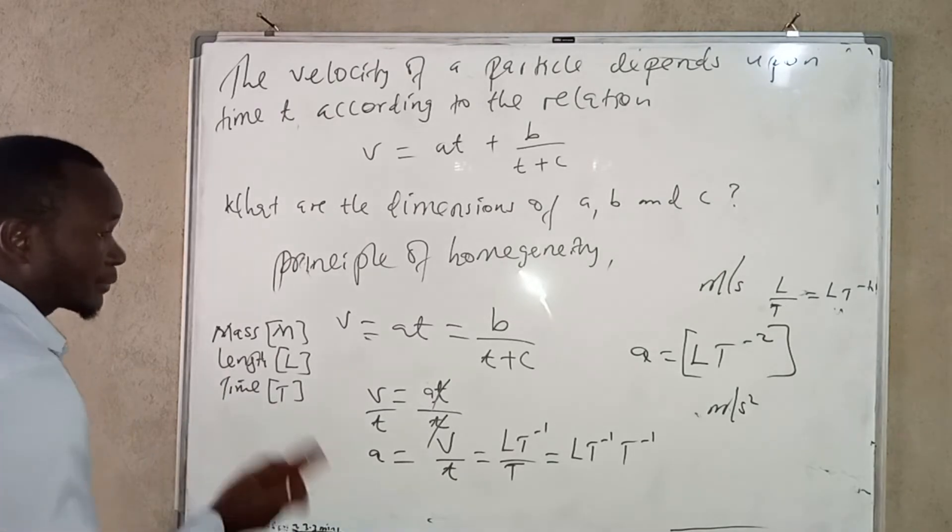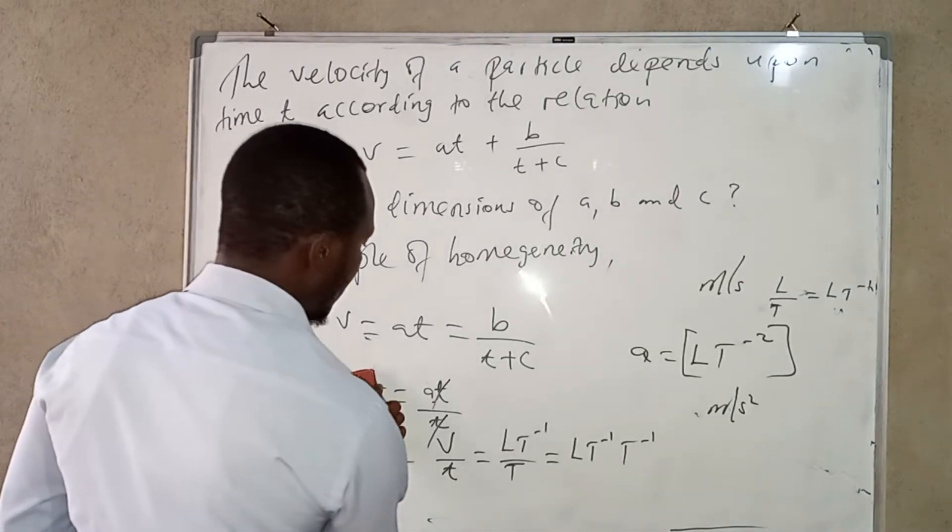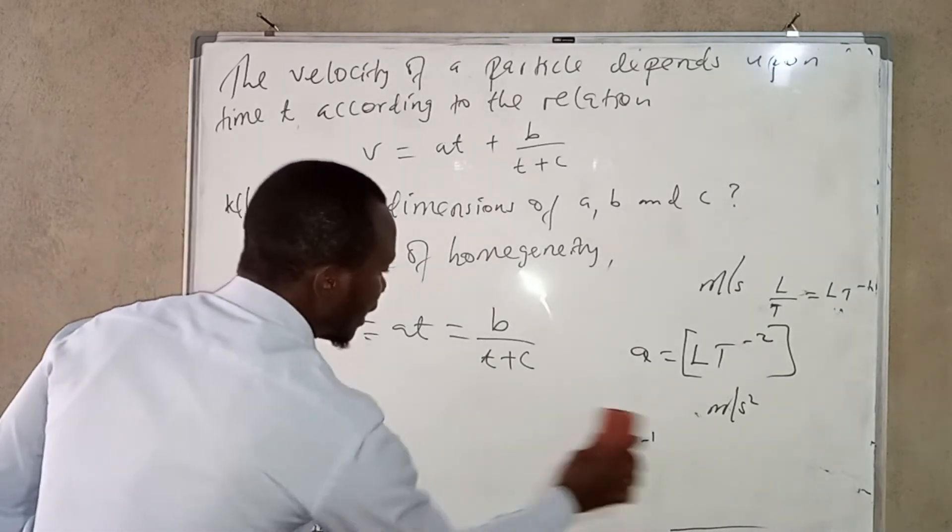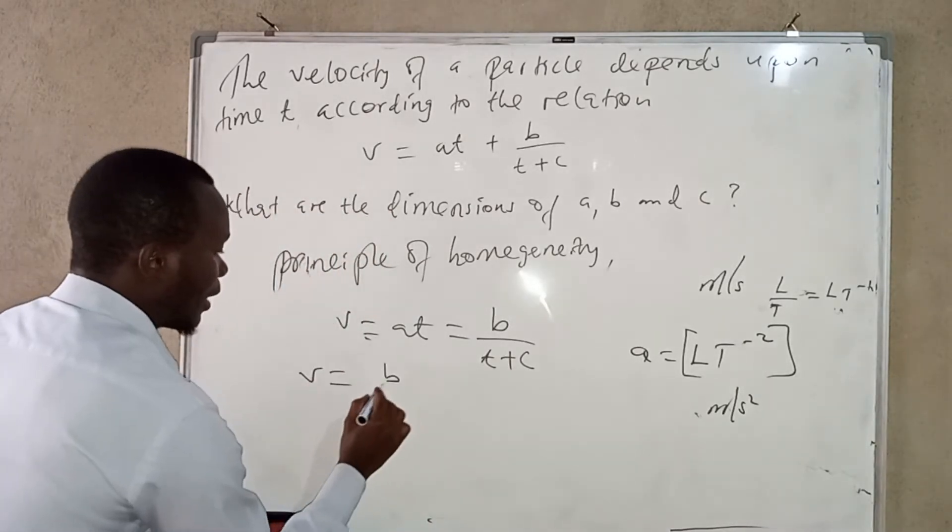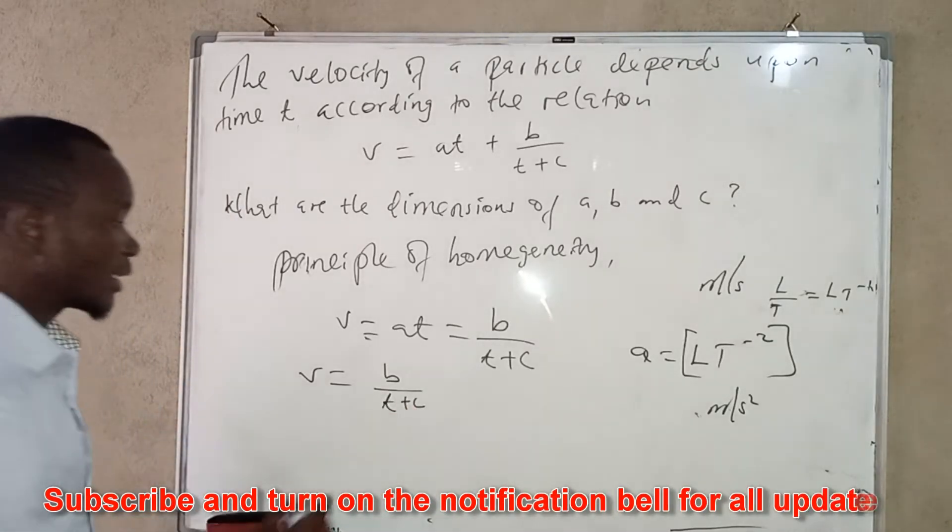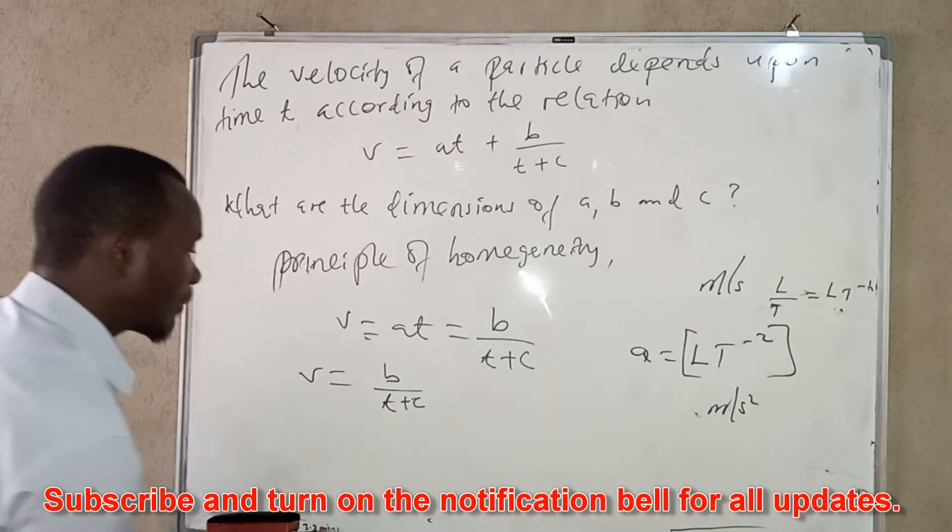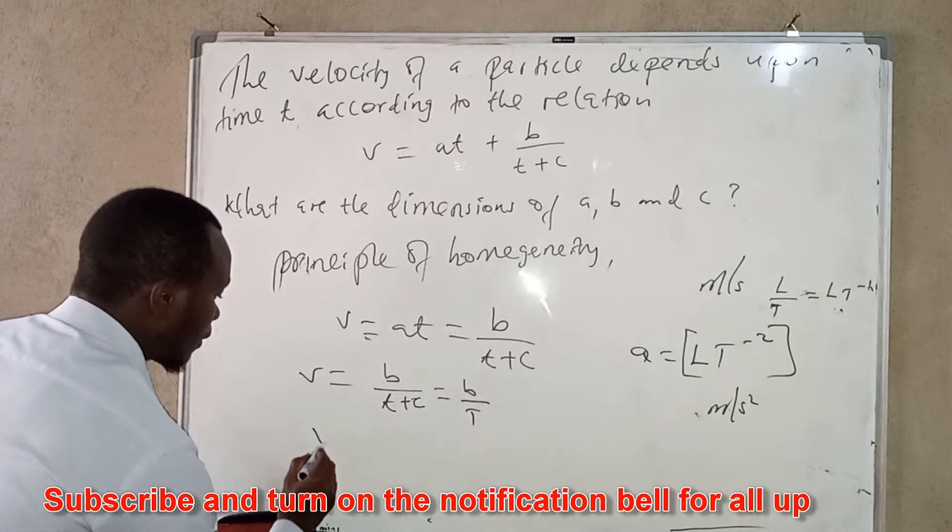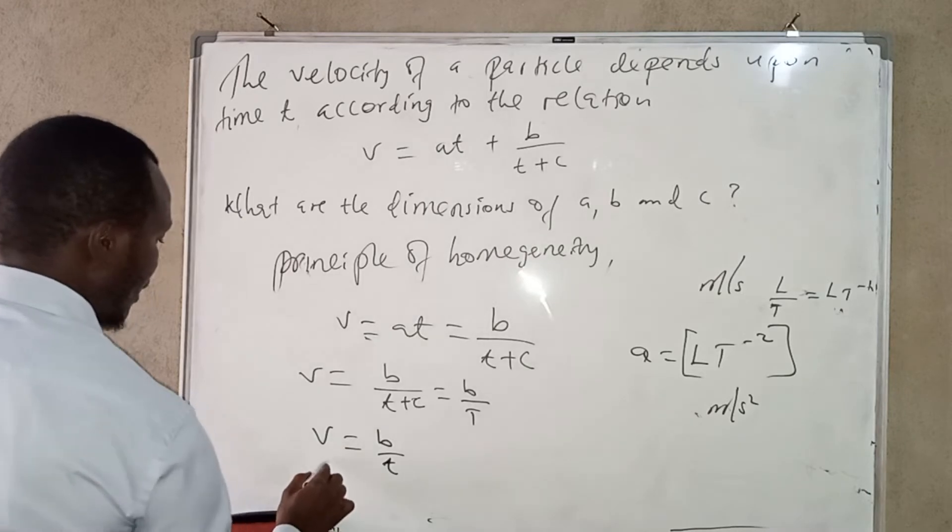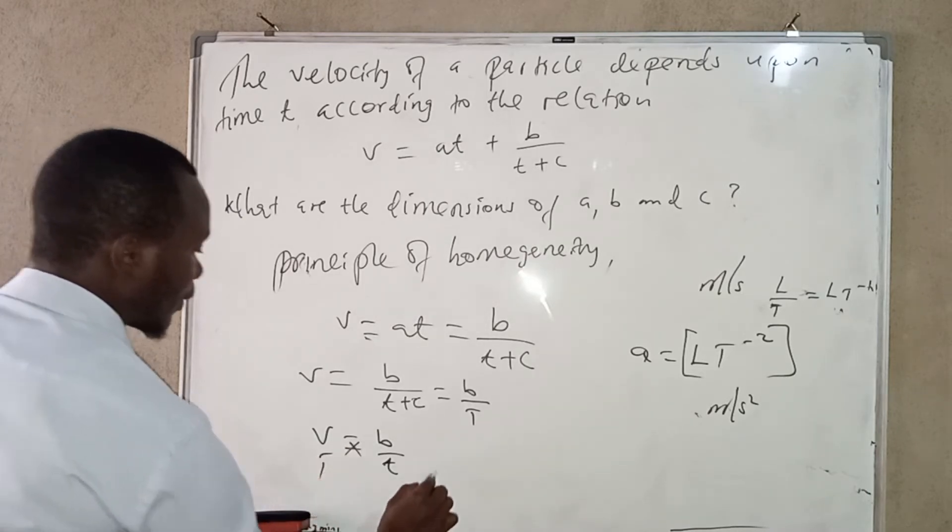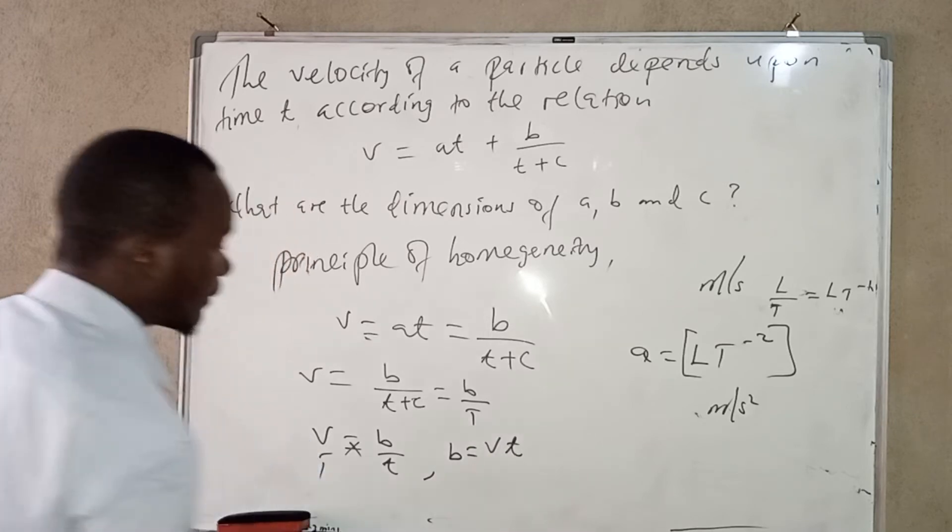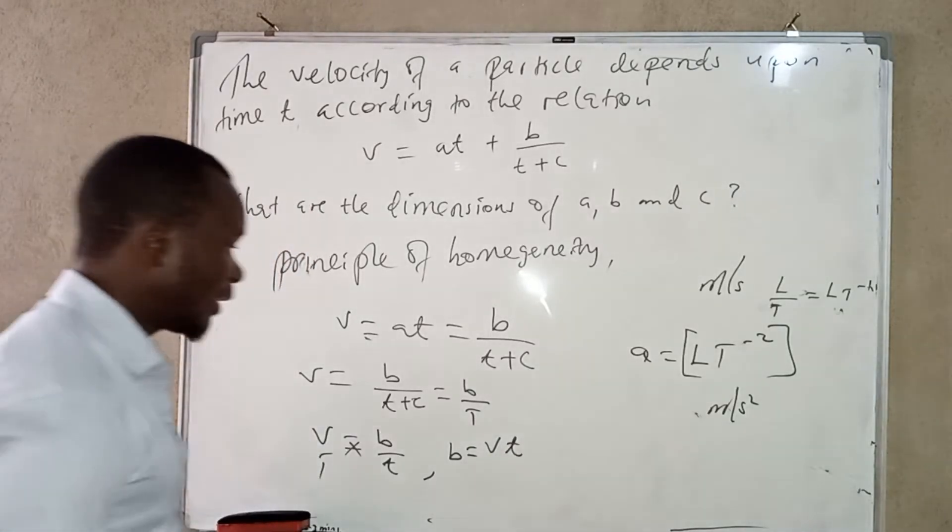Then for B, for B we can use any relation. v is equal to B over T plus C. So this, we say that T is equal to C in terms of dimensions. So B is equal to B over T. So making B the subject by cross multiply, we are going to have B is equal to v T.